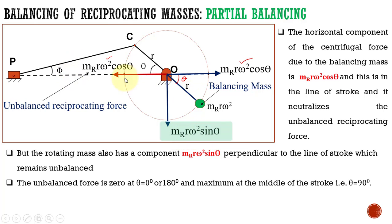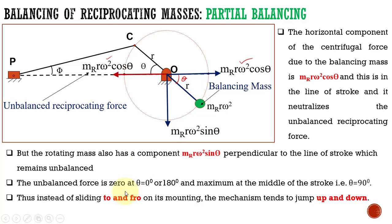So now we are able to balance the unbalanced reciprocating force. But while trying to balance it, we have gotten another unbalanced force acting in the vertical direction. Initially, without adding the balancing mass, the mechanism tends to slide to and fro on its mounting. After adding the balancing mass, the horizontal unbalanced forces are neutralized. On the other hand, we have gotten a vertical force which remains unbalanced.